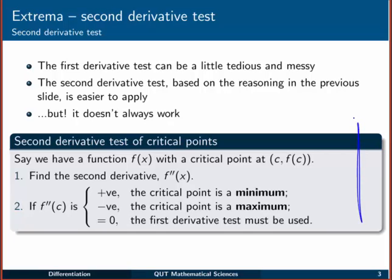Here's the second derivative test. Say we have a function f(x) with a critical point at (c, f(c)). First, find the second derivative f''(x). If f''(c) is positive, the critical point is a minimum. If it's negative, the critical point is a maximum. If it equals zero, it doesn't tell us anything, and we have to use the first derivative test.